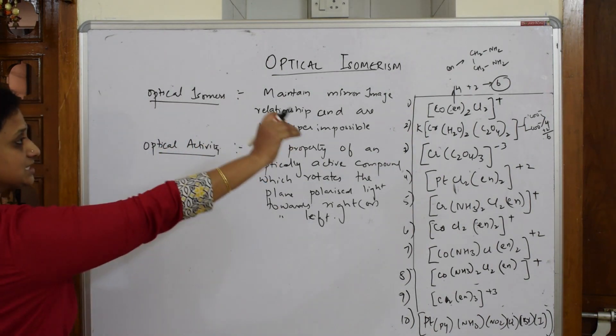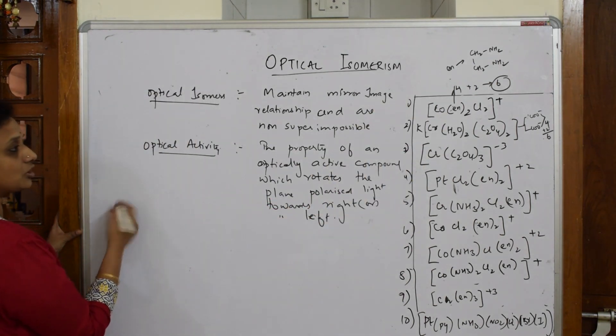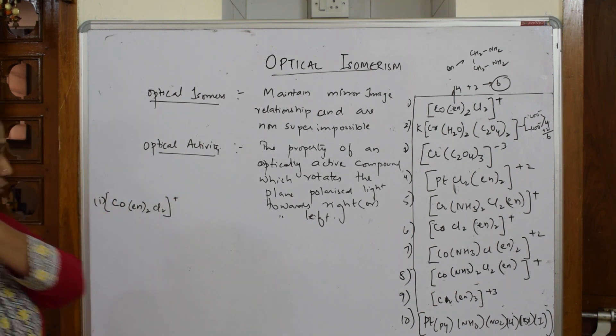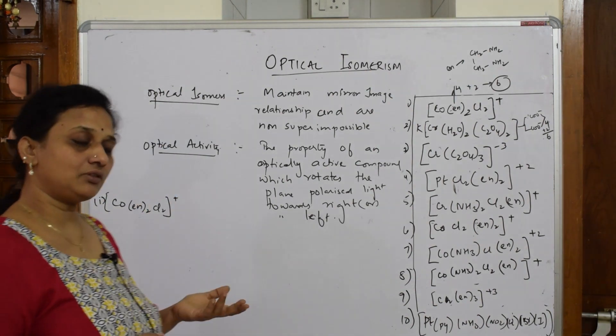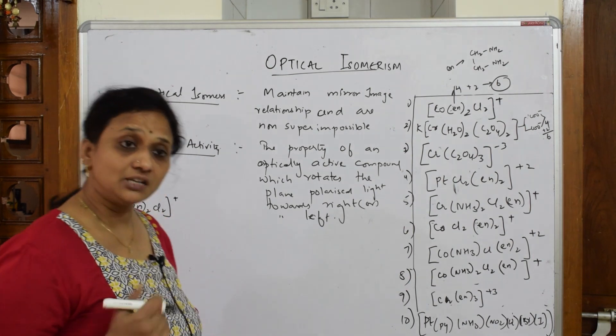I've written such a big sentence. Let us take an example and understand. Suppose in the exam they give you this example. Let's start. The first important - copy the example. They've given me first one: Co(en)₂Cl₂⁺. First important thing you have to draw the mirror image, then you have to show which is cis and trans.